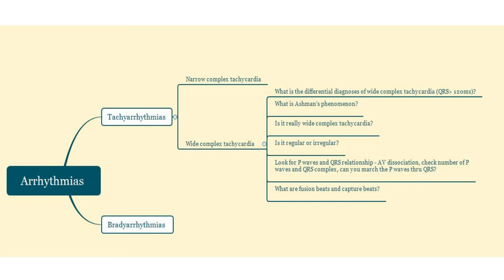Let's mind map today's video. Under tachyarrhythmias, we have wide complex tachycardia. Here are six questions in front of you. The first two questions are general. The last four are the ones that you ask yourself when you have an ECG in front of you — an ECG which consists of a wide complex tachycardia — and you want to differentiate whether it is ventricular tachycardia or a supraventricular tachycardia with aberrancy. You will understand this further as the video progresses.